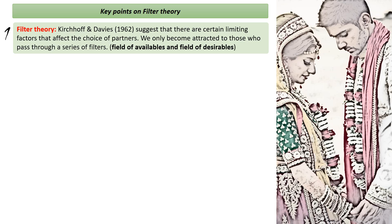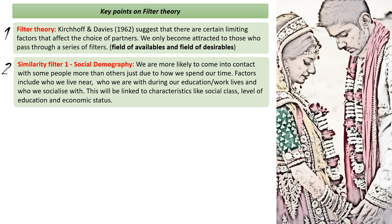Similarity filter number one is social demography. You're more likely to come in contact with some people rather than others, just due to how we spend our time and our geography. These factors include who do you live near, who are you with when you go to college, university, or work, and who and where do you socialise. These educational, work, and social choices are linked to characteristics like your social class, level of education, and income. So while we feel there's a chance of meeting anyone, in fact we only meet a certain subset of people during our day-to-day interactions, and these are the people we would start a relationship with.